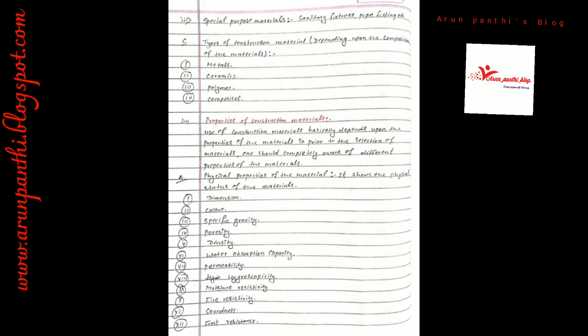Now let's look at the properties of construction material. Physical properties include: dimensions, color, specific gravity, porosity, density, water absorption capacity, permeability, moisture resistance, fire resistance, and soundness.